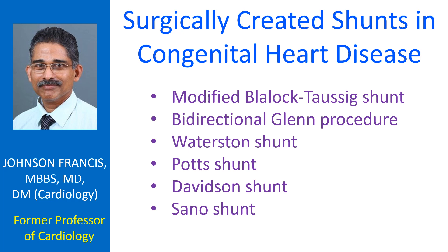Classic Blalock-Taussig shunt is an end-to-side anastomosis of the subclavian artery to the pulmonary artery. In the modified Blalock-Taussig shunt, a Gore-Tex tube graft is used to connect the subclavian artery to the pulmonary artery.